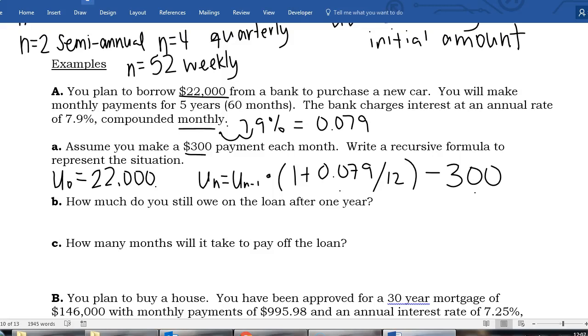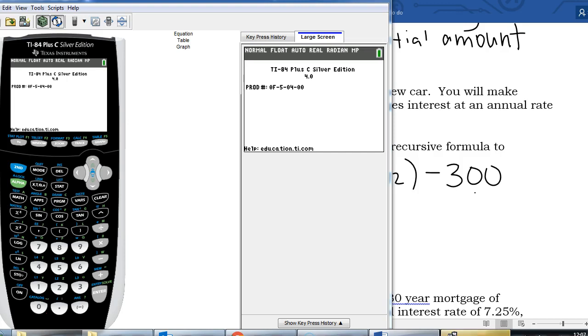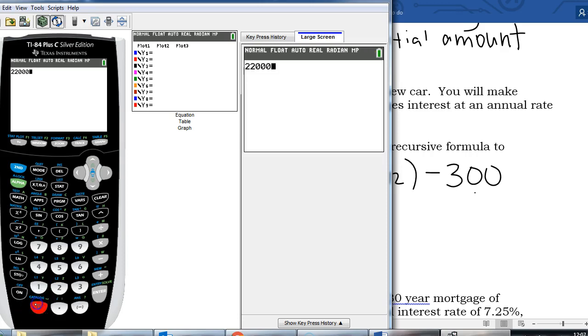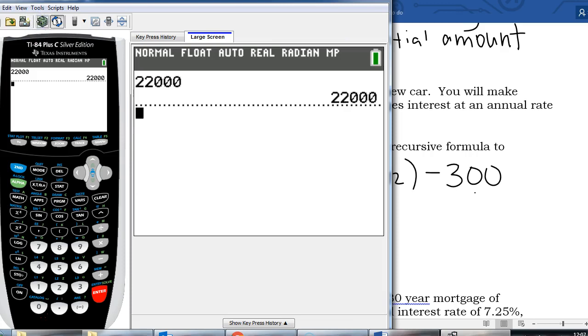And we're going to seed our calculator just like we usually do, putting in our u zero, and then we hit enter and that allows us to do this recursively. So I'm going to put in my u zero and hit enter.